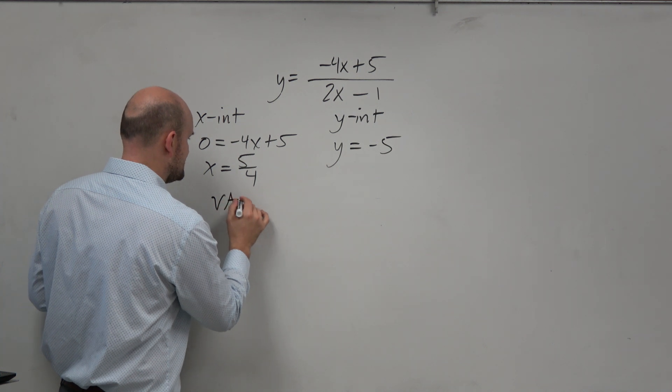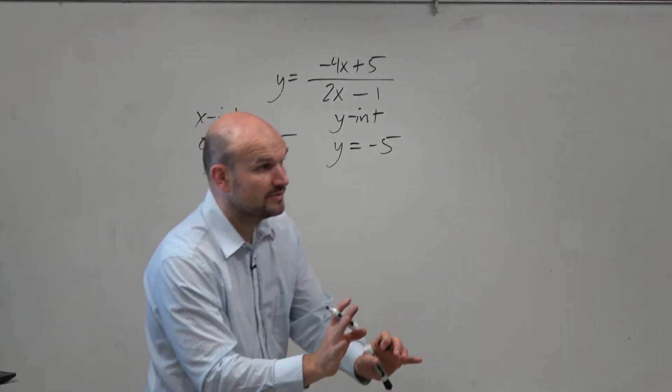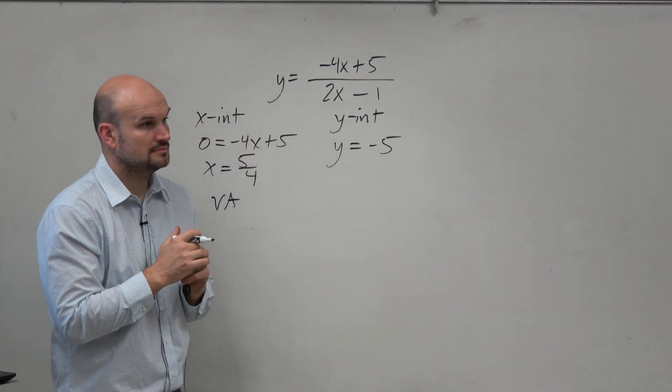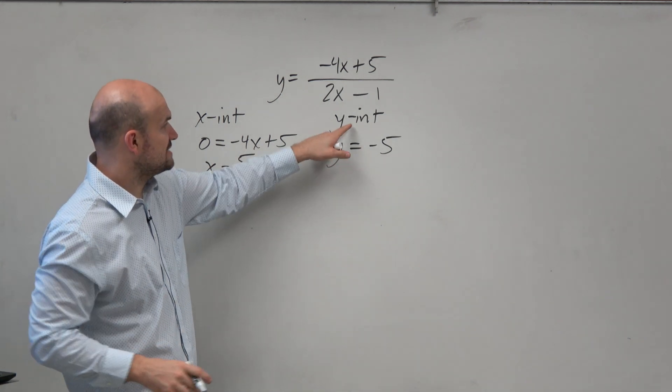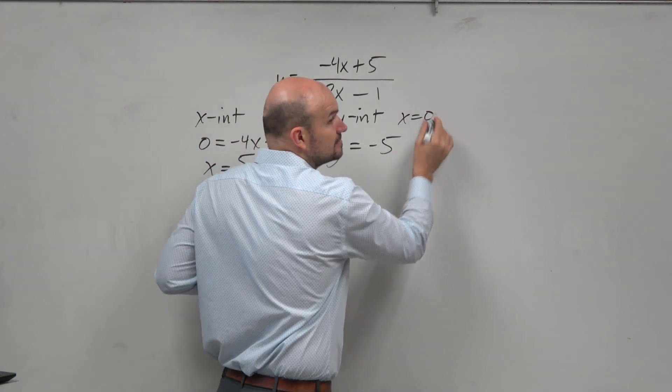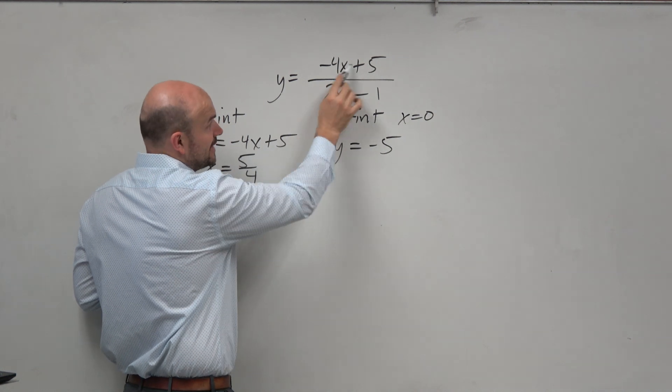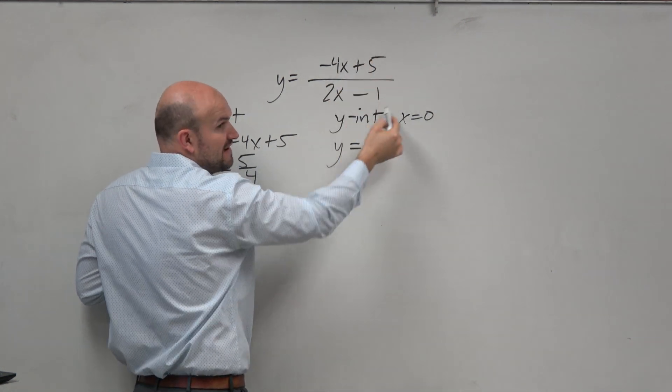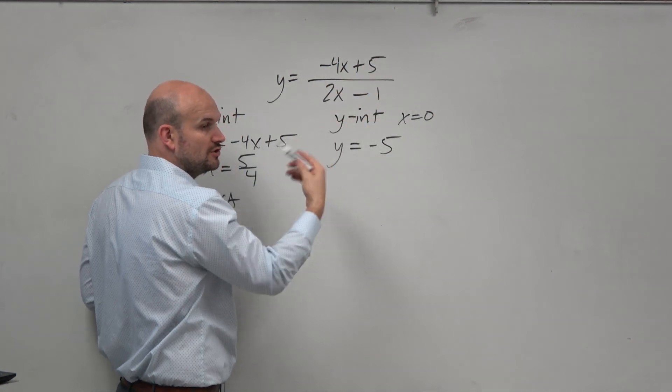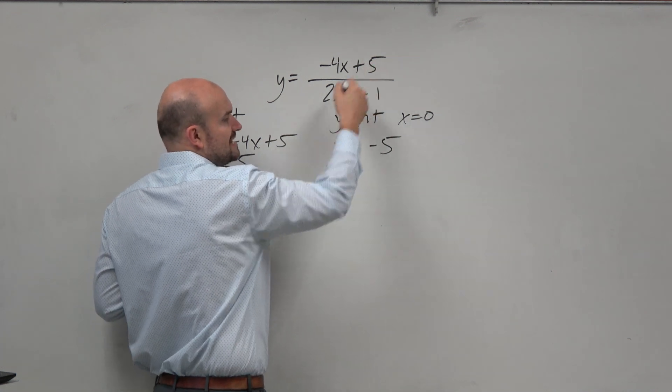Vertical asymptote, again, is the values that make the denominator equal to 0. Be careful. Yes, question. Remember, the y-intercept is when x is equal to 0, right? So if you plug 0 in for x, that goes to 0, that goes to 0. You're just left with 5 over negative 1. That's why I told you when we did that first time, it's always just constant over constant.